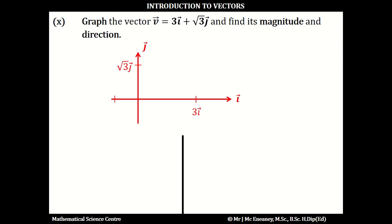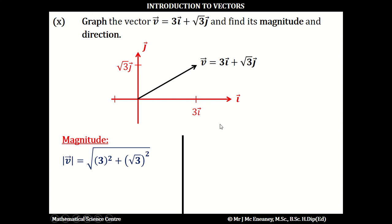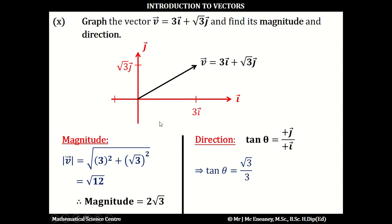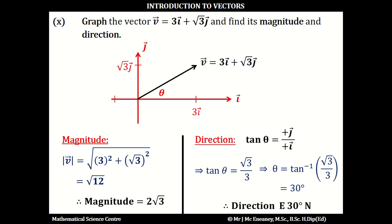In part 10, if we've got 3i plus root 3j, we move across 3 and up root 3. Using Pythagoras' theorem, the magnitude of v is going to be the square root of 3 squared plus root 3 squared. This works out as 9 plus 3, which is 12, so the magnitude of v is root 12, and that simplifies to 2 root 3. To get the angle theta, the tan of theta is the positive j over the positive i. This will be root 3 over 3, and theta is inverse tan of root 3 over 3, which means the angle theta works out as 30 degrees. Positive i means east, and the angle is 30 degrees towards the north because it's a positive j.